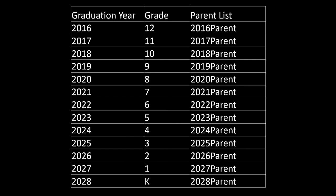To be on one of these lists, you really just need to know the year your student graduates. So if you have a kindergartner and you haven't calculated that your student is going to graduate in the year 2028, you can use this handy chart to figure that out.